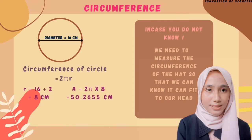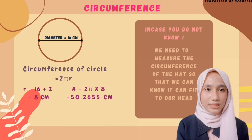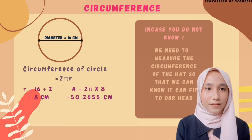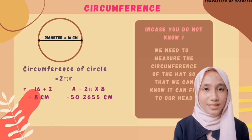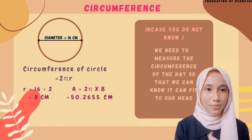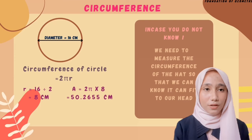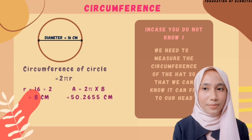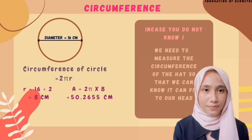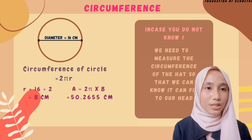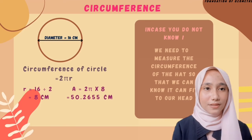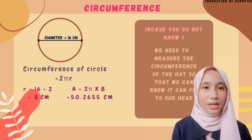Next, we need to find the circumference of the circle. Circumference = 2πr. First, we find the radius: diameter ÷ 2 = 16 ÷ 2 = 8 cm. So the circumference = 2π × 8 = 50.2655 cm. In case you are wondering, we need to measure the circumference of the head so that we can know whether the hat can fit on our head.